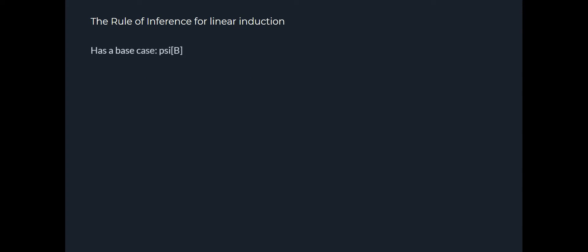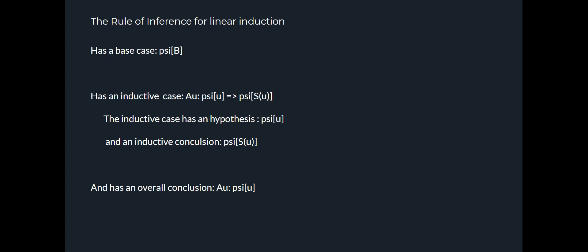And so we can make a rule of inference for linear induction. If we have a base case that's ψ(b), and we have an inductive case that's for all u, ψ(u) implies ψ(s(u)). If we prove these two things, and if these are the only two things that we need—okay, I'm sorry, I'm slightly off—we assume ψ(u), and then we prove ψ(s(u)). And that means ψ(u) implies ψ(s(u)). And that means that for all u, ψ(u) is true. That's the rule of inference for linear induction.